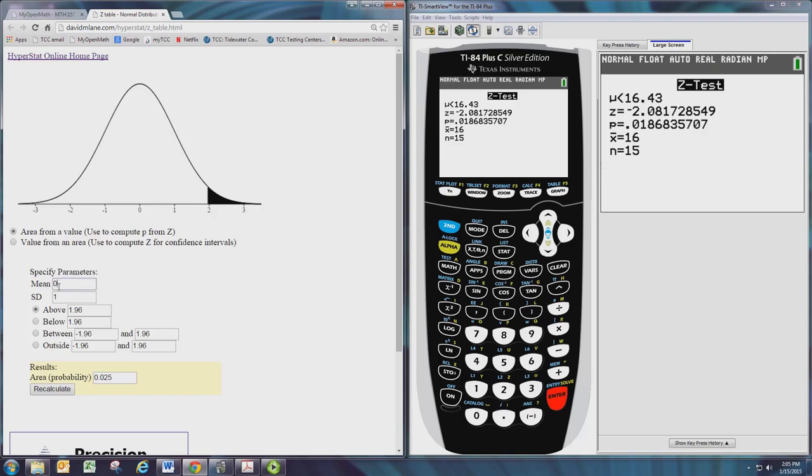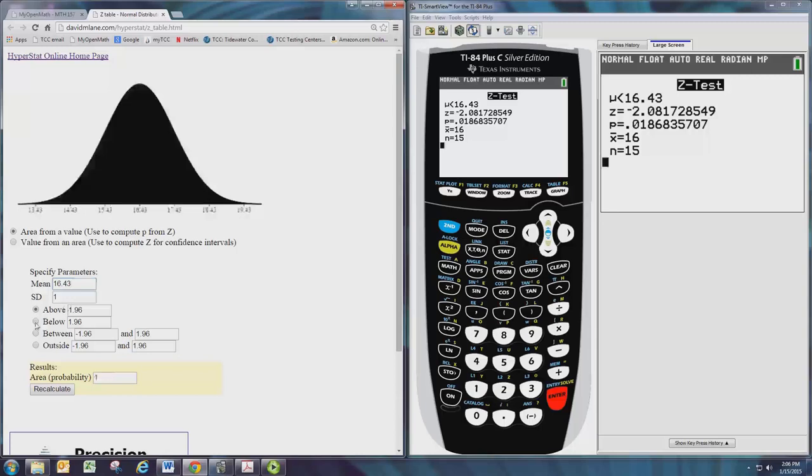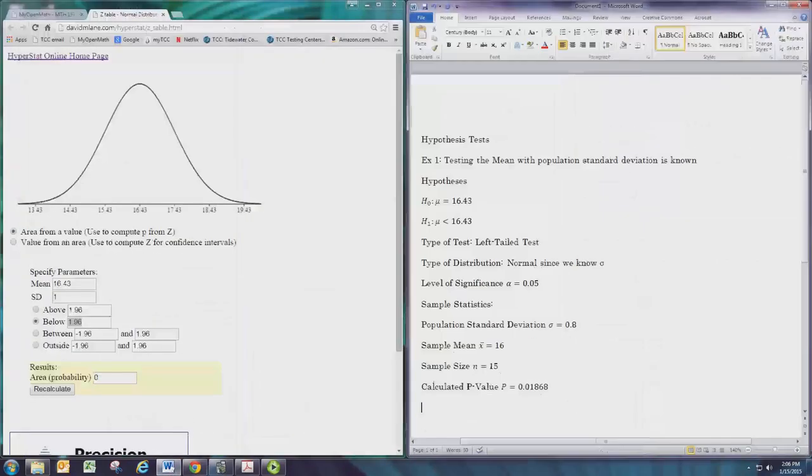Now the mean will be the number that we had in the hypotheses, that's the 16.43, and the test is a left-tailed test. So we want to go below and we want to put in the value for the sample mean, which is 16.